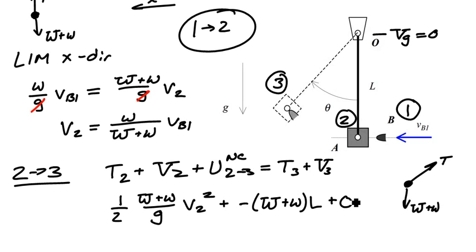I have no non-conservative work in this problem. At the point of maximum height, I'll have zero speed. And the datum at that instance is going to be equal to minus the total weight of the system, W plus w, times, in this case, L times the cosine of the angle theta max.